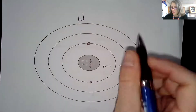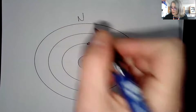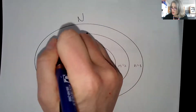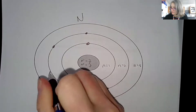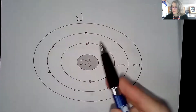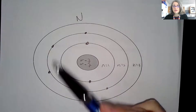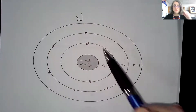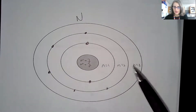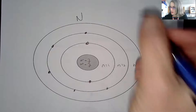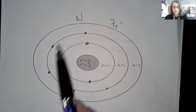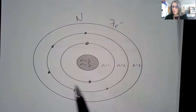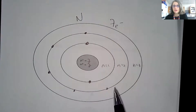Then we're going to have five more electrons in the second energy level — one, two, three, four, five. So I now have two electrons in the first energy level and five in the second energy level, for a total of seven electrons in that atom. As I get more and more electrons, I'm going to start to involve more and more of the energy levels.